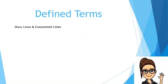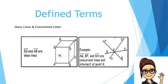Skew lines are non-coplanar lines — therefore they are neither parallel nor intersecting. Concurrent lines are three or more lines that intersect at the same point. In the first figure showing a cube, line EG is in the upper part and line AB is in the lower part — both are not on the same plane, so line EG and line AB are skew lines. In the second figure, lines AG, BF, and DH are concurrent lines because all three intersect at the same point, point K.